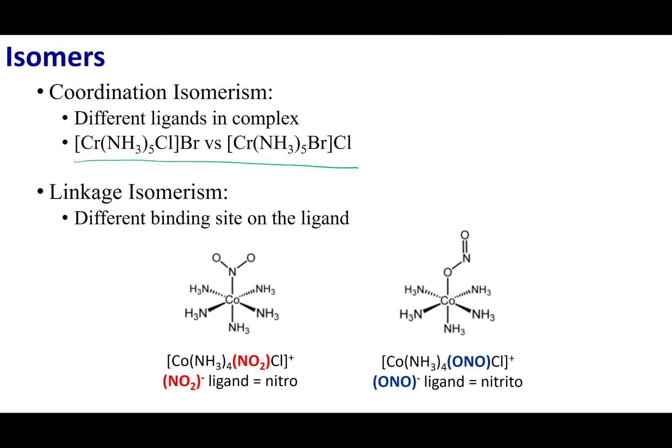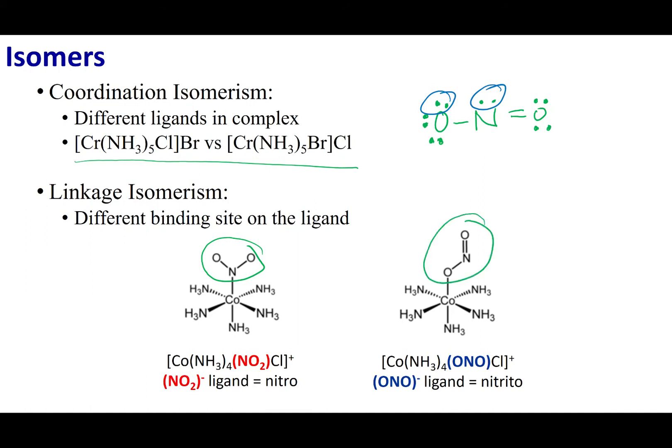The next type of isomer is linkage isomers. In linkage isomers, the ligand is attached by a different atom. Let's take a look at the ligand NO2-. If you draw it as a Lewis structure, this ligand has lone pairs on both oxygen and nitrogen. So the ligand can attach in two different places: one way is through the nitrogen, and the other way is through the oxygen. These are made out of the same atoms but are isomers of each other with different connectivity.